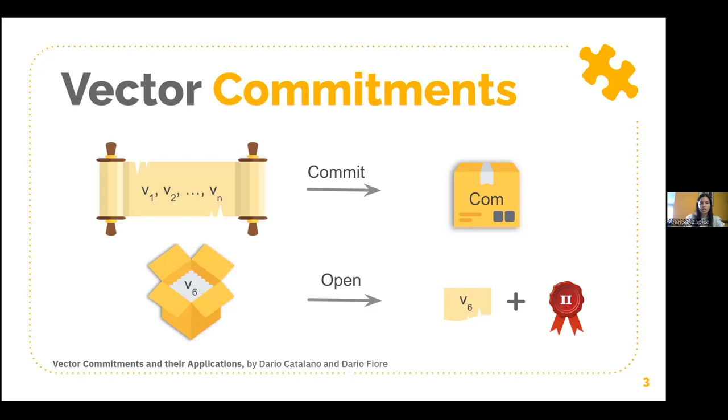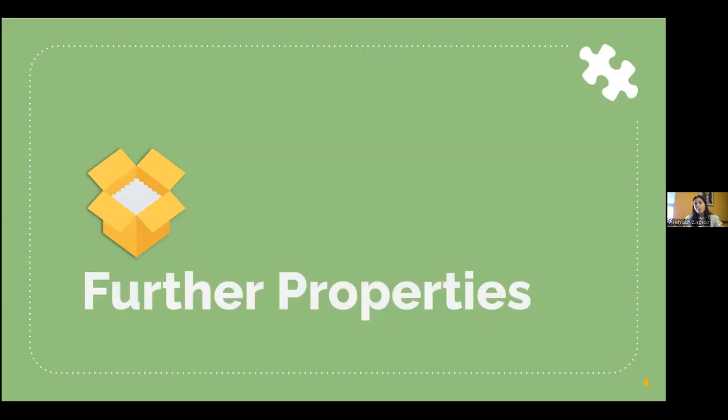As introduced in the seminal work, vector commitments were aiming for position openings. That means that the prover can convince the verifier that some specific position in the vector stores a specific value. The more we are using vector commitments these days, the more properties we want from them.